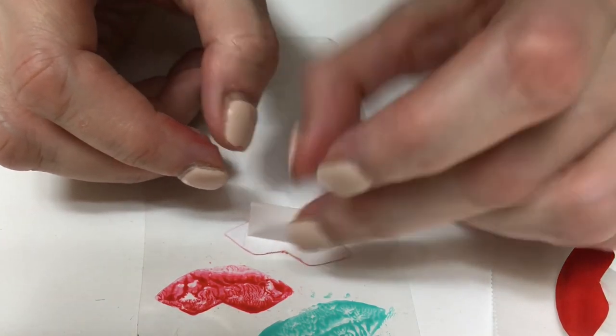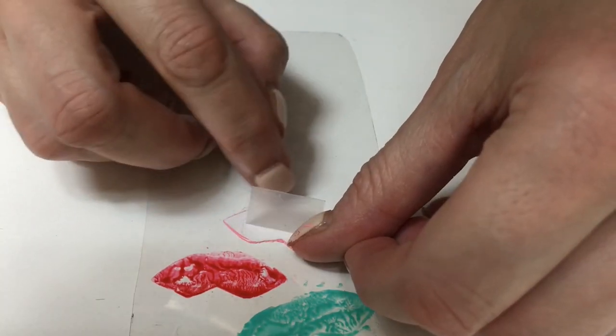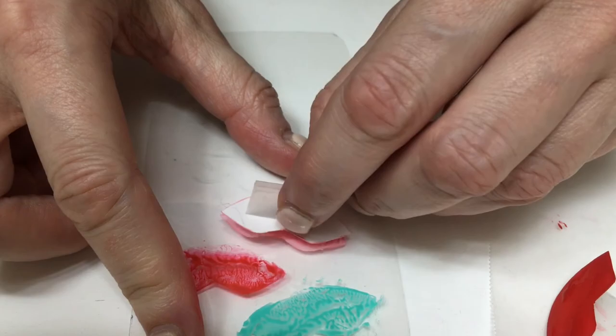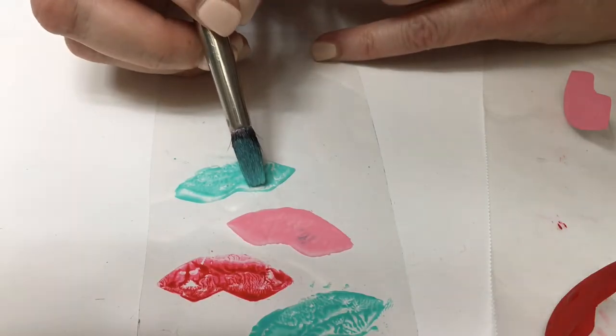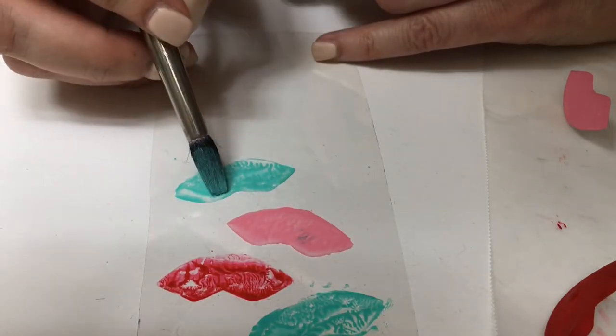Of course not all the shapes are going to look perfect and that's the beauty of it, I think. You can arrange them with your brush, add more paint if you need to, go over with the stamp as many times as you need to.